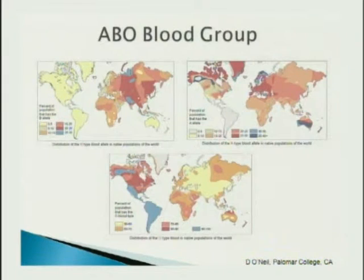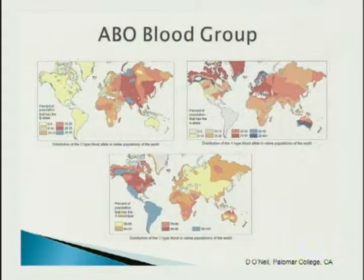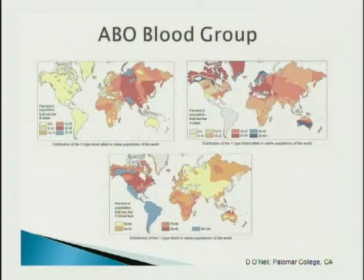Moving to the ABO blood group system. This fascinating world map shows human ABO variation: blood group B has the highest intensity in Central Asia; blood group A is very high in the Blackfoot Indian tribe in Alaska and Canada but almost absent in Central and South America; while blood group O predominates in Central and South America. This is why in blood banking we ask about a patient's race — blood groups vary with race.